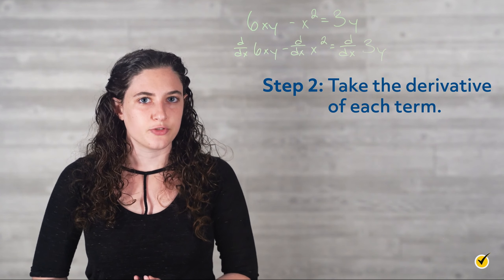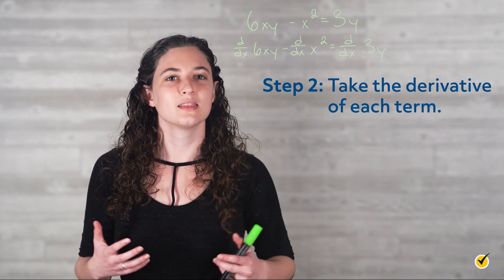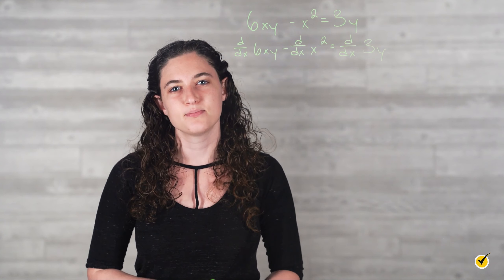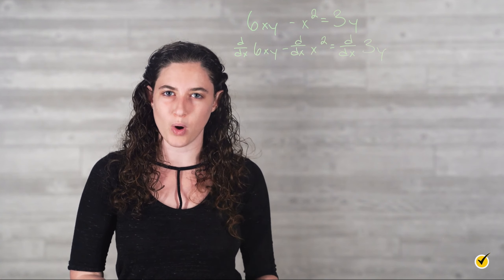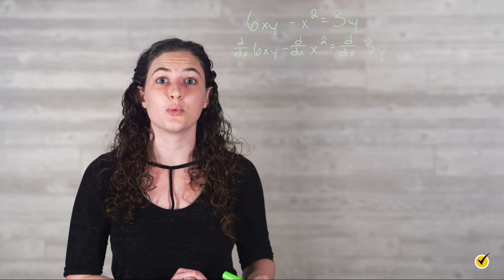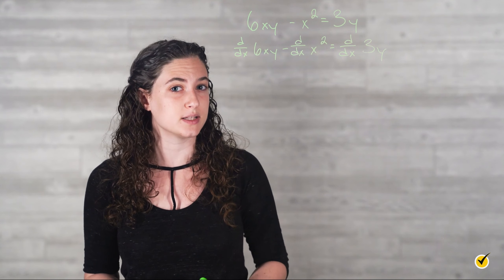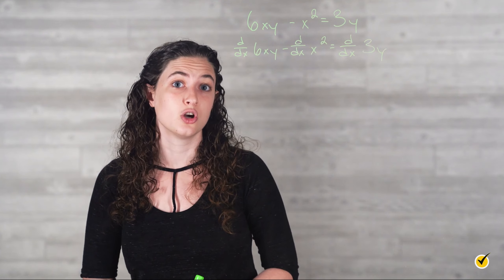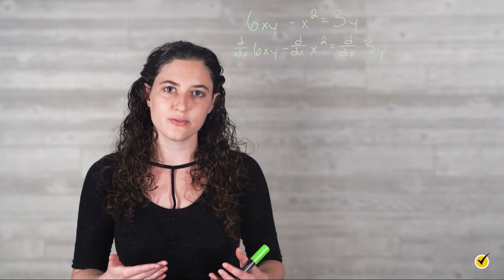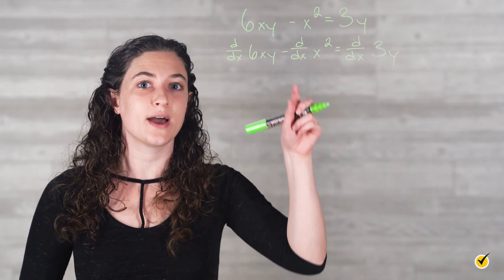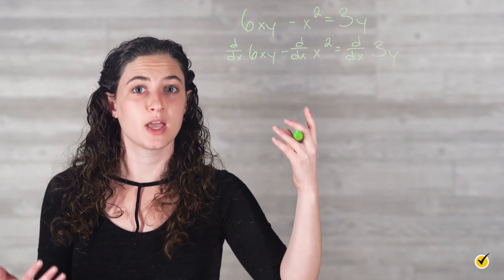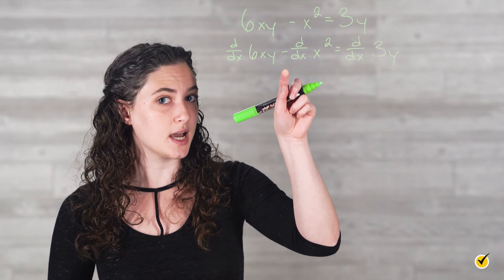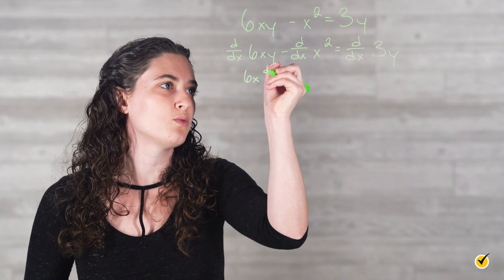The second step in implicit differentiation is taking each of these derivatives. Let's look at these derivatives one at a time. First, we have the derivative of 6xy with respect to x. To do this, we remember that when we talk about y, we typically are talking about y itself being a function of x. With implicit differentiation, the same idea applies — we are going to consider all y's to be implicit functions of x. For this term, then, we have 6x times a function of x. As with derivatives of other products, this calls for the product rule. So first times the derivative of the second will give us 6x times dy over dx.